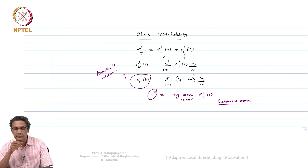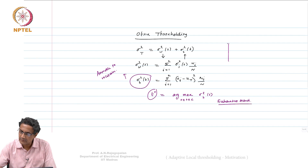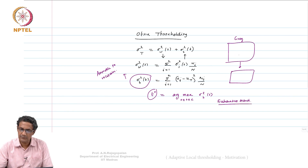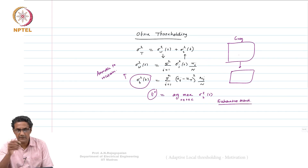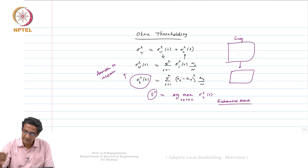In that sense, thresholding works as follows: given a grayscale image that you want to convert to binary, you choose t* such that all intensities less than or equal to t* are reduced to grey level 0, and all intensities greater than t* are assigned value 1.